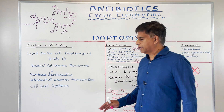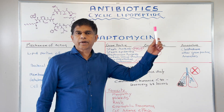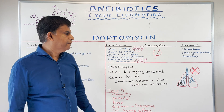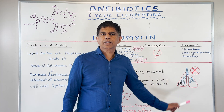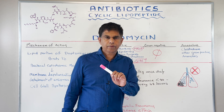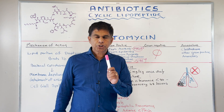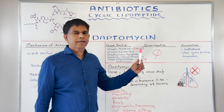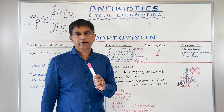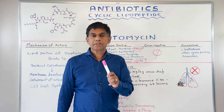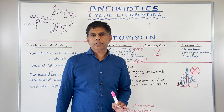Now let's look at the coverage. There is no gram-negative coverage — very important. And it does not penetrate into the lungs, so don't give it for pneumonia — very important. Now let's look at the gram-positive coverage. Two important things you have to know: MRSA — methicillin-resistant Staphylococcus aureus — and VRE — vancomycin-resistant enterococci.